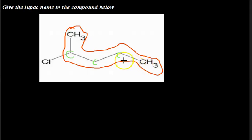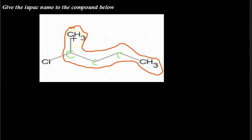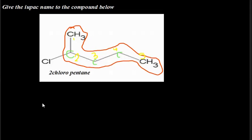If we start numbering from this end, chlorine would be at carbon four — but that is not the lowest number we can give it. If we start numbering from the other end, chlorine would be at carbon two, giving it a lower number. So the correct numbering is: carbon one, carbon two, carbon three, carbon four, carbon five — with chlorine at carbon two. Therefore this compound is 2-chloropentane, since it has five carbon atoms in a straight-chain alkane.